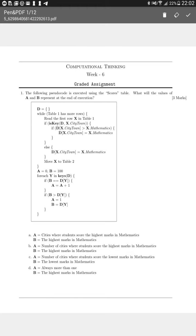Let's get into this question. The question states that the following pseudocode is executed using the scores table. What are the values of A and B represent at the end of execution?